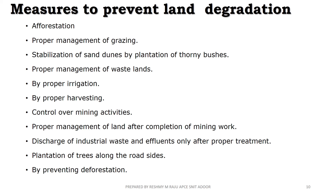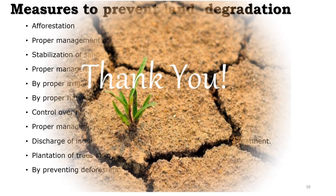To prevent land degradation, measures include afforestation, proper management of grazing, stabilization of sand dunes through planting new plants, proper irrigation methods and harvesting methods, regulation of mining activities, and proper treatment of effluents. We also need to plant roadside trees and manage land use to reduce deforestation.